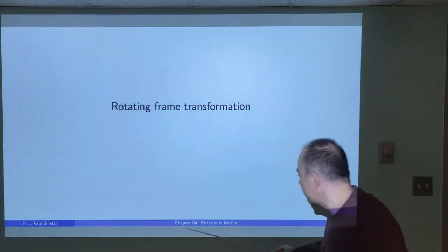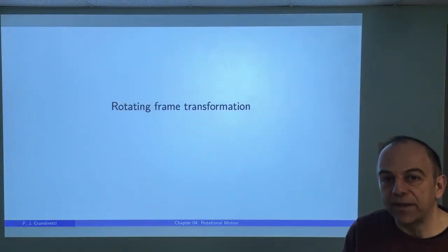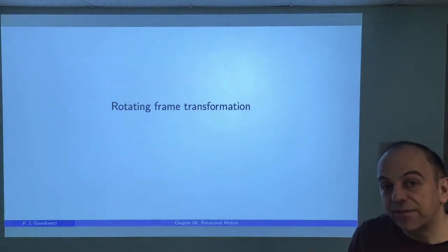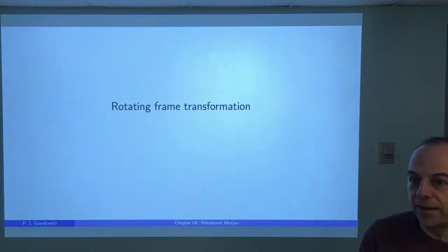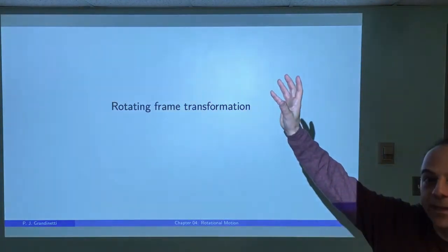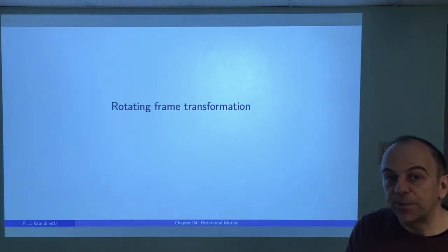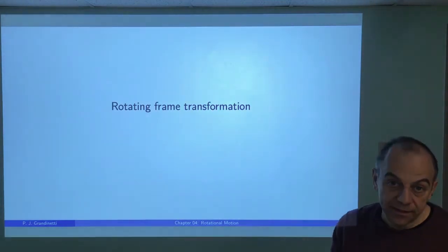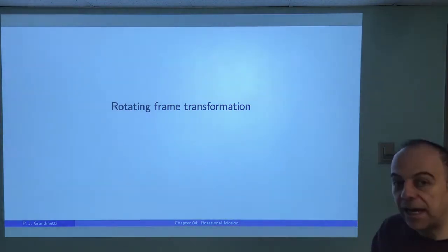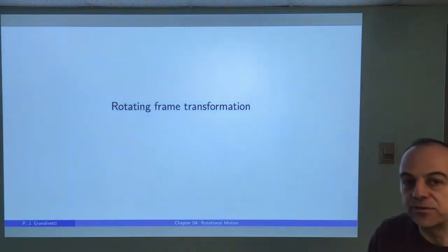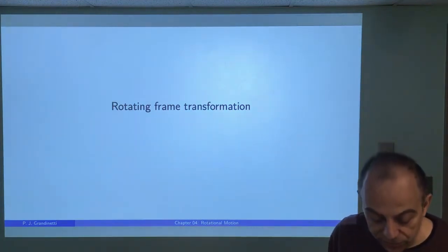Welcome back to Chem 4300. In this video, we're going to finish up chapter four on rotational motion. In this last bit, we're going to derive the equations of motion for a rigid body from two different perspectives: the space-fixed or inertial frame, and from the point of view of the body fixed in the principal axis system. To do that, we'll first look at the rotating frame transformation, and then Euler's equations of motion for the rigid body.